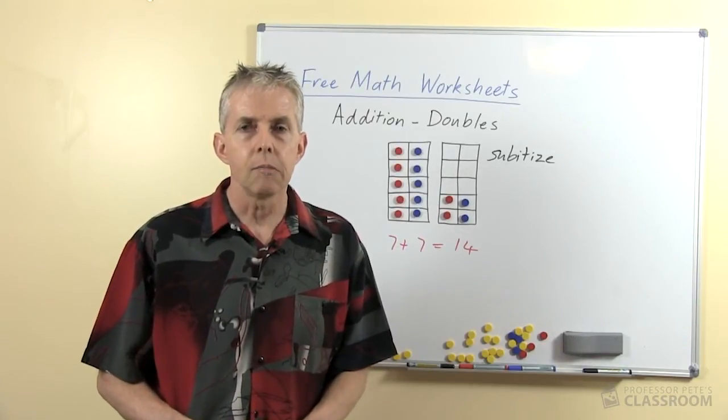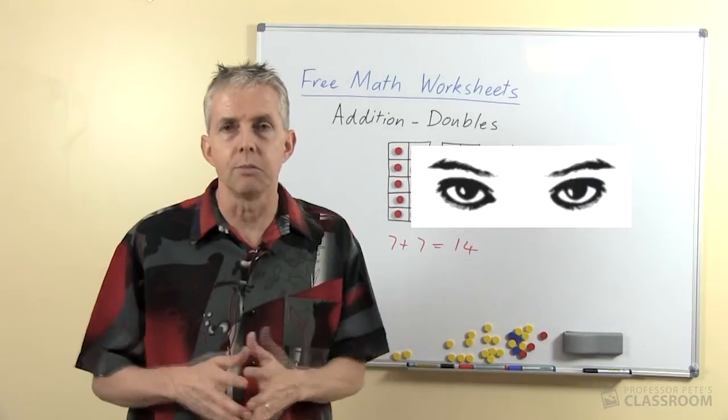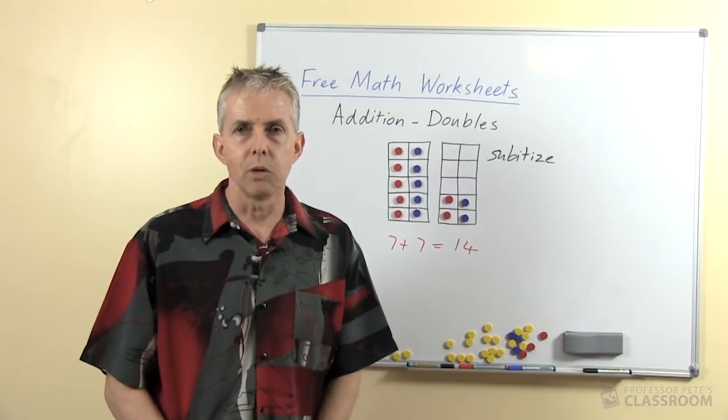Double 1 can be likened to 2 eyes and there would be other examples of course, so 2 eyes, double 1 is 2.